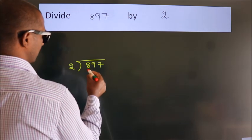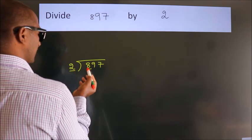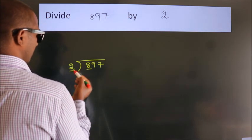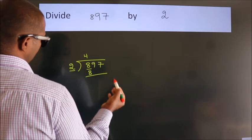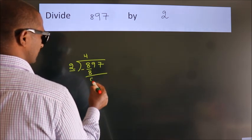Here we have 8, here 2. When do we get 8? In 2 table, 2 fours, 8. Now, we should subtract. We get 0.